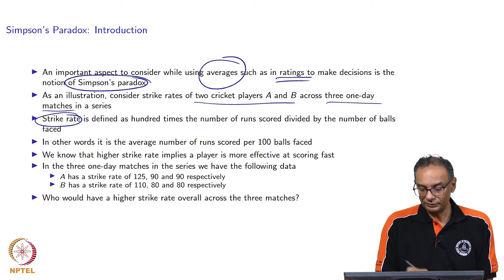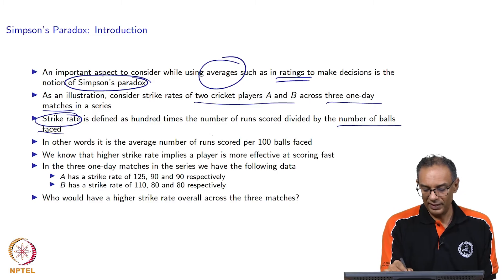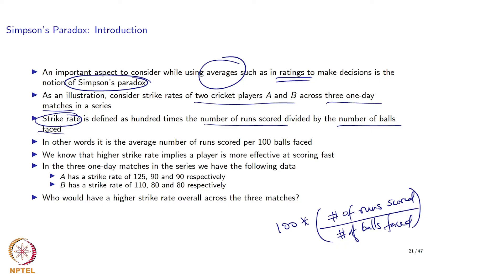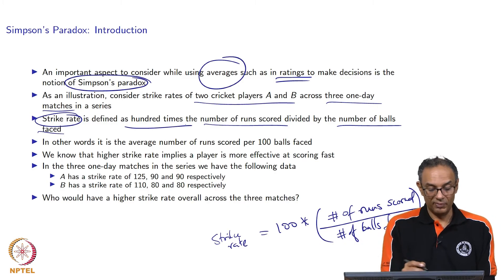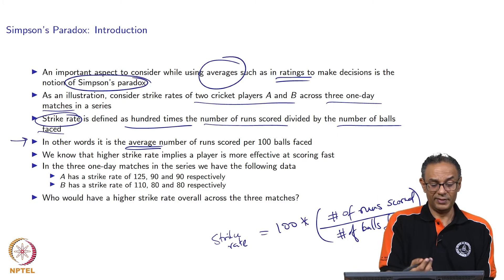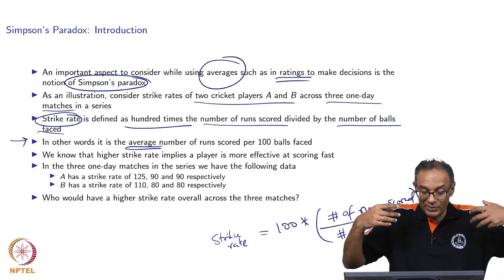We are going to look at the strike rate of these two players. The strike rate is the number of runs scored divided by the number of balls faced, multiplied by 100. It is also called the average number of runs scored per 100 balls. In some sense, the strike rate is a rating because the division is there. The rating of a player reflects how good a person is — a higher strike rate implies the player is more effective at scoring fast.